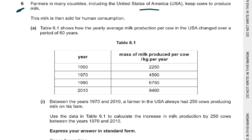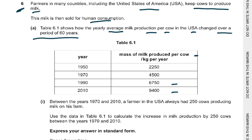Farmers in many countries including the United States of America keep cows to produce milk. This milk is then sold for human consumption. Table 6.1 shows how the yearly average milk production per cow in the USA changed over a period of 60 years. In 1950 it was 2250 kilograms per year, in 1970 it was 4500, in 1990 it was 6750, and in 2010 it went to 9400.